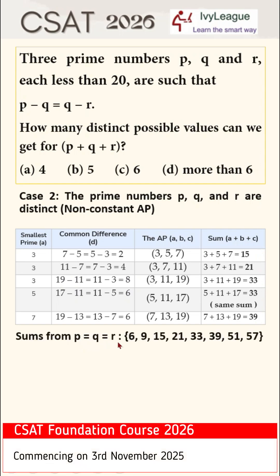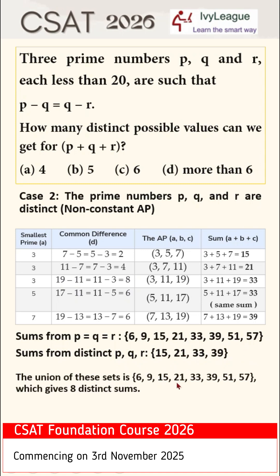Sums of p equal to q equal to r are 6, 9, 15, 21, 33, 39, 51, 57. Sums of distinct p, q, r are 15, 21, 33, and 39. The union of both of these sets gives me eight distinct sums. So the correct answer is option d, which is more than 6.